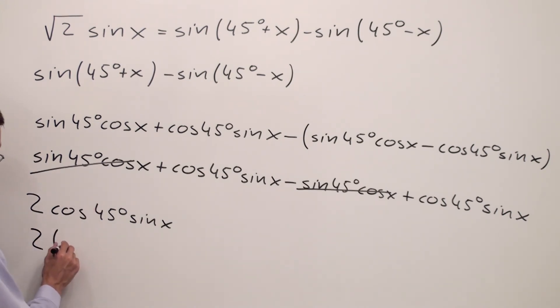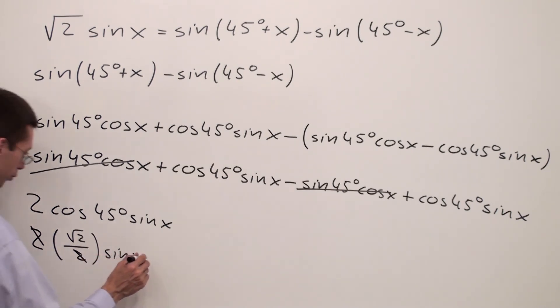Now cosine of 45° equals square root of 2 over 2. Sine x times square root of 2 over 2 equals square root of 2, because this 2 is going to eliminate the denominator and I'm going to end up with square root of 2 sine x.